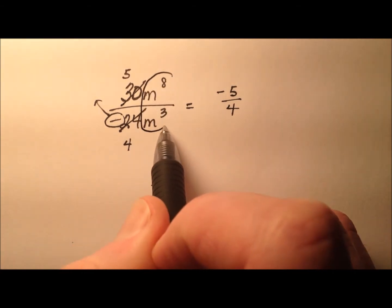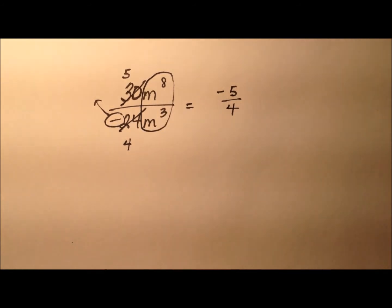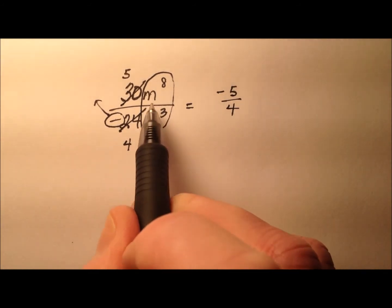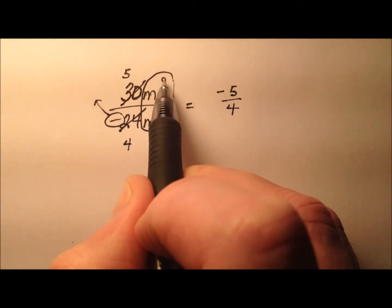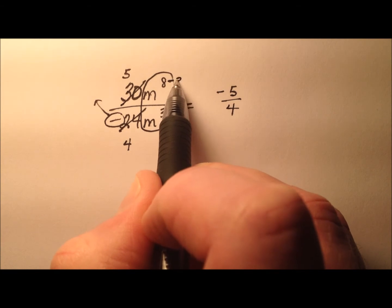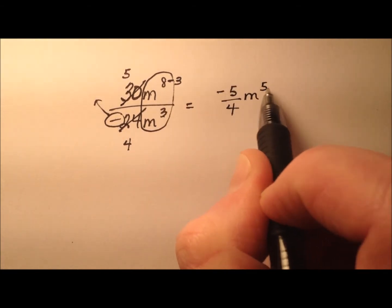But now we have to deal with these variables. We have m to the eighth divided by m cubed. Remember, when we're dividing like bases, we will subtract the exponents. So it's going to be 8 minus 3, which will be m to the power of 5.